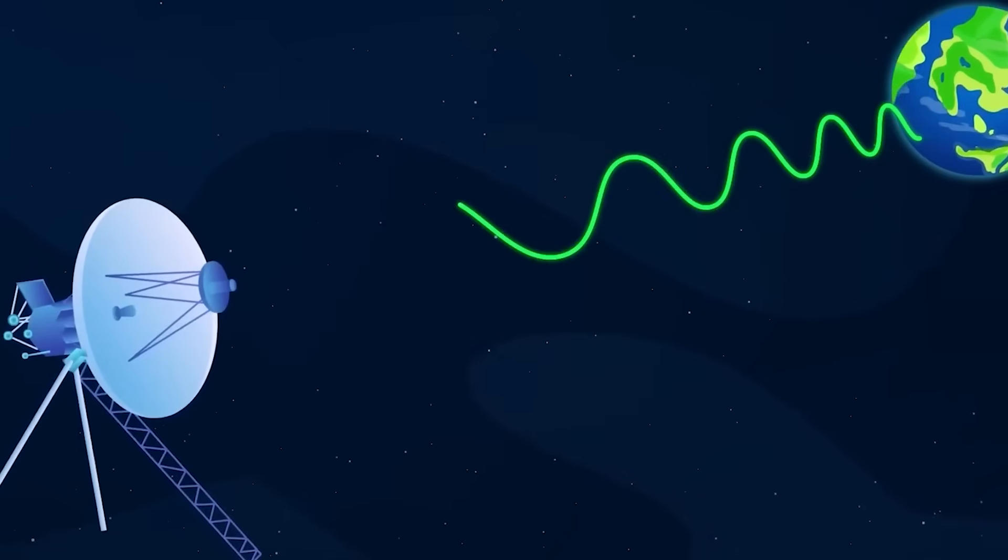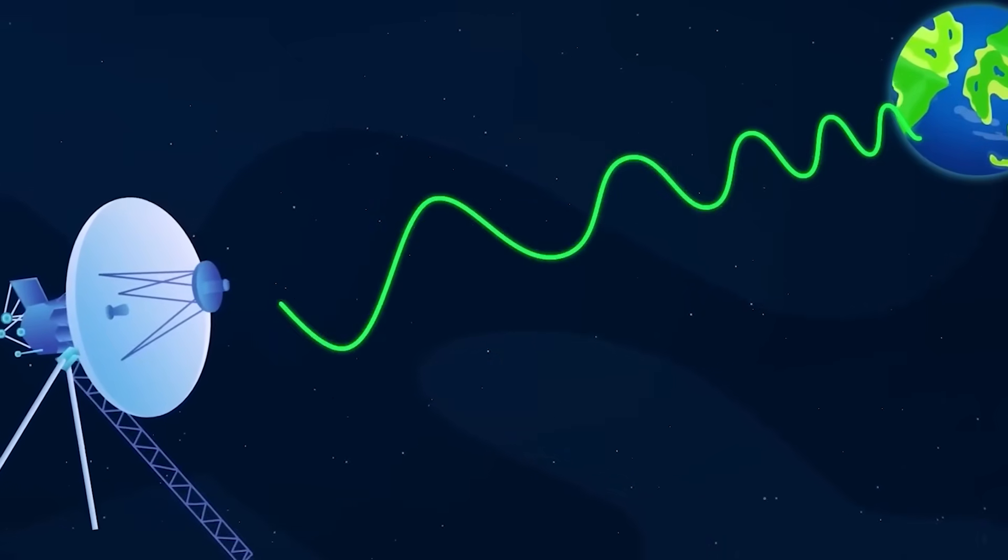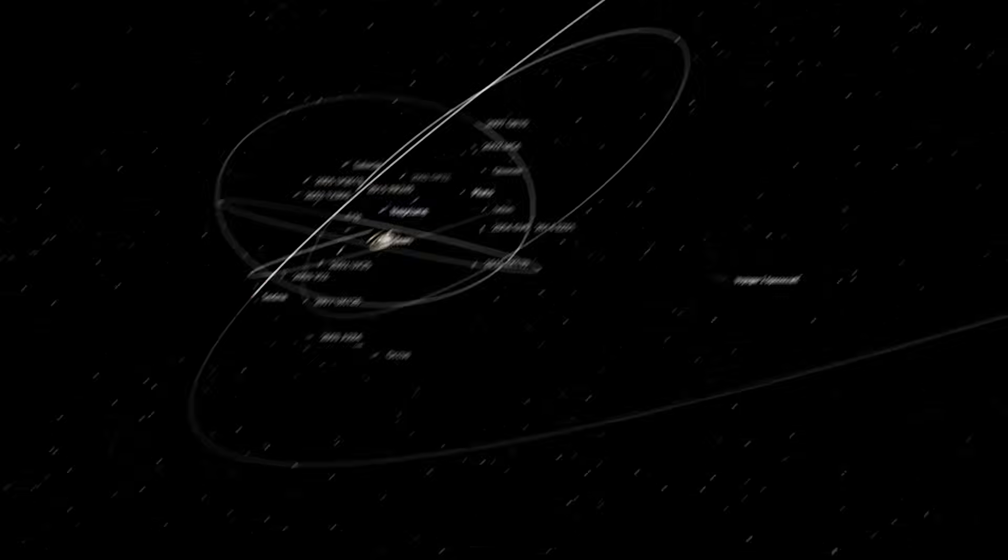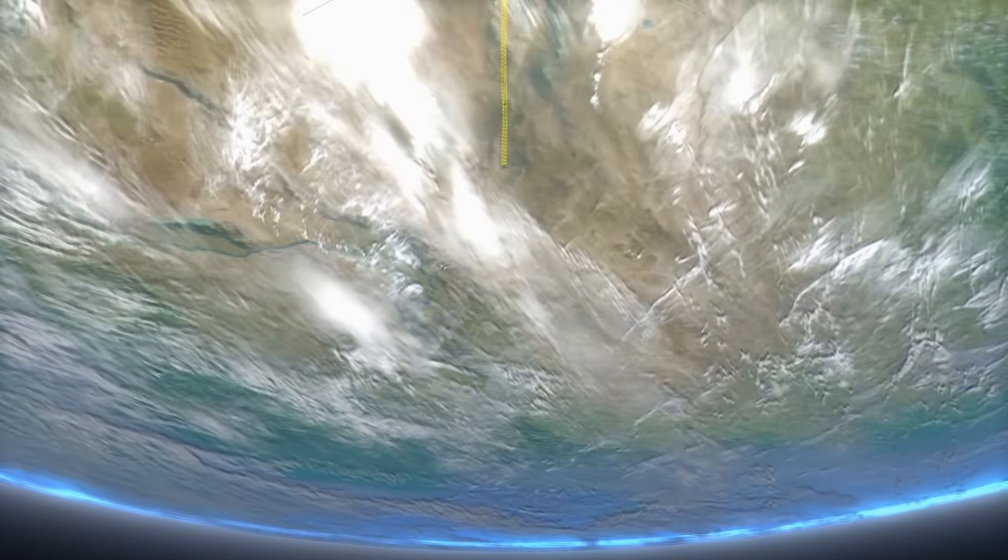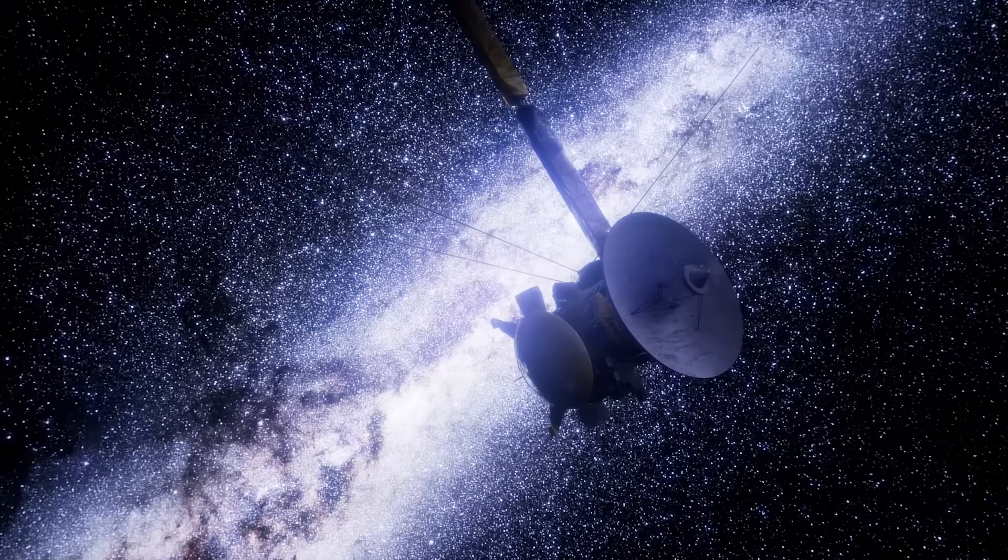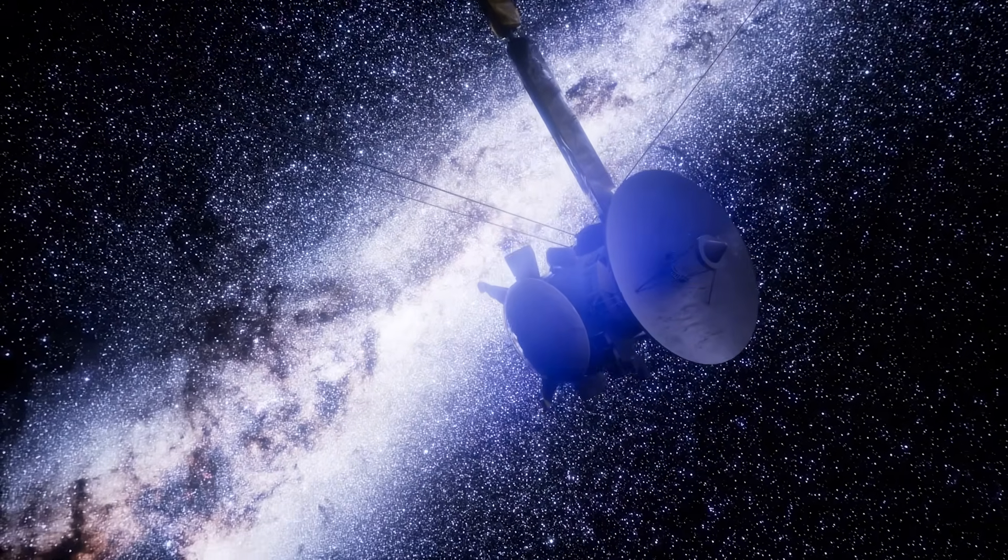The signal could be a greeting, a scan, or simply the cognitive echo of something noticing another something for the first time. As analysis deepens, more questions arise. If this unknown force is intelligent, why now? Why has Voyager 1 only just encountered it after years of travel through interstellar space?